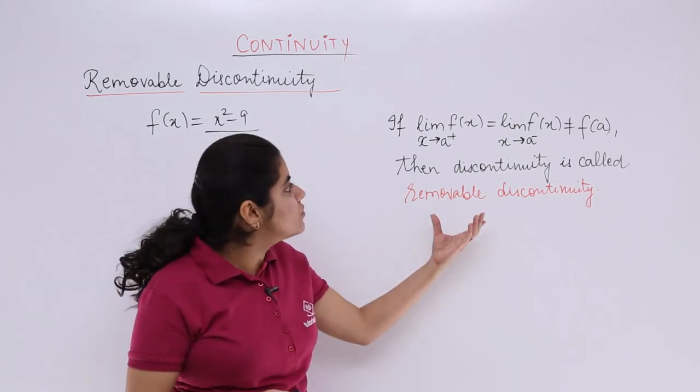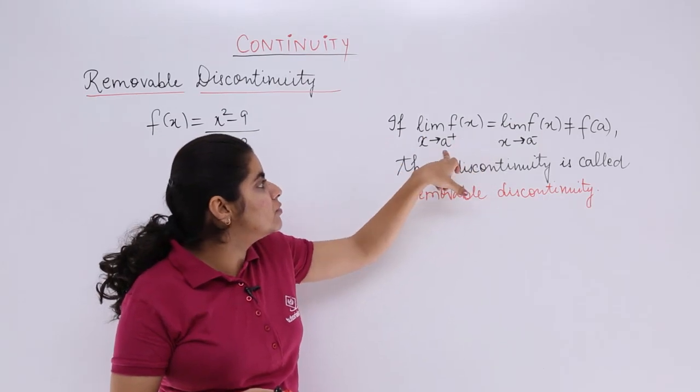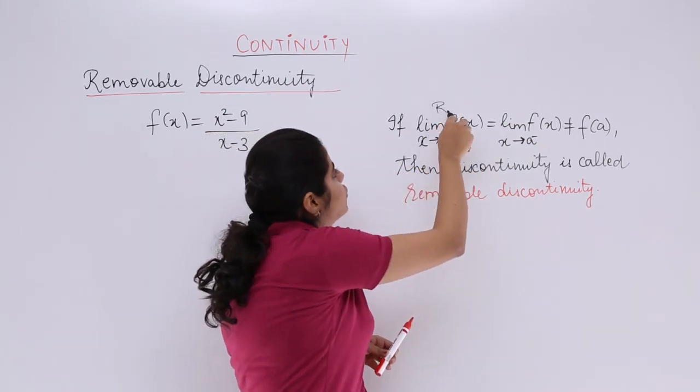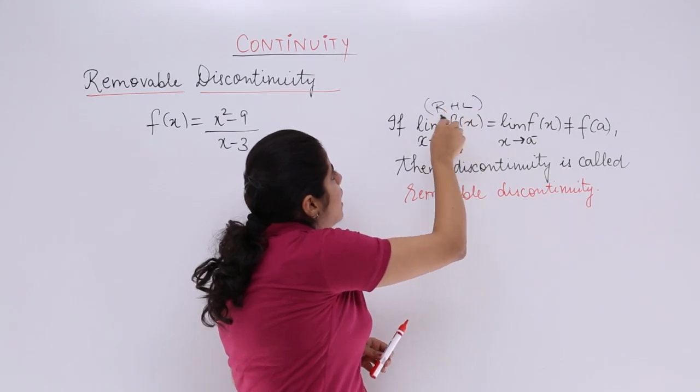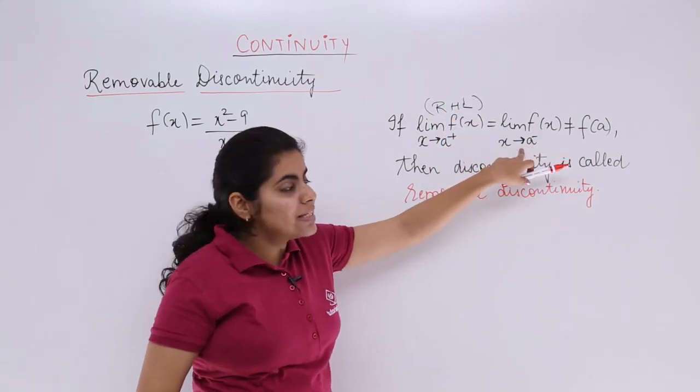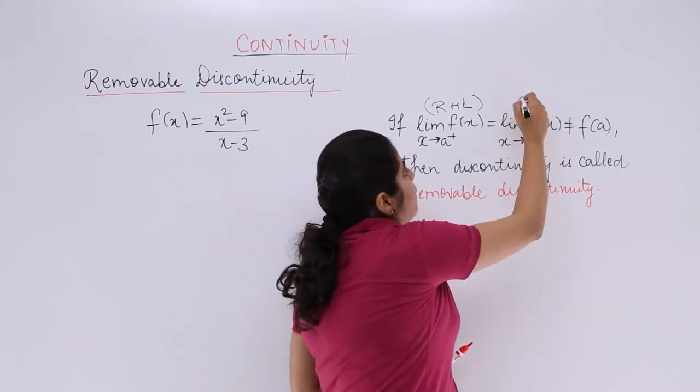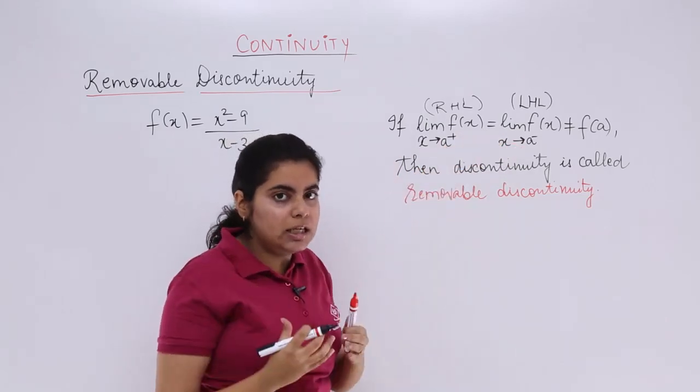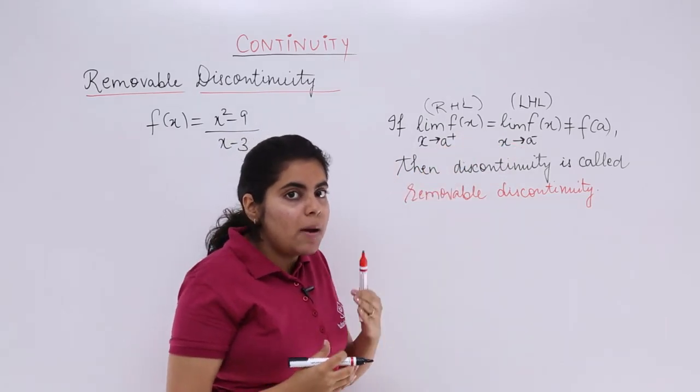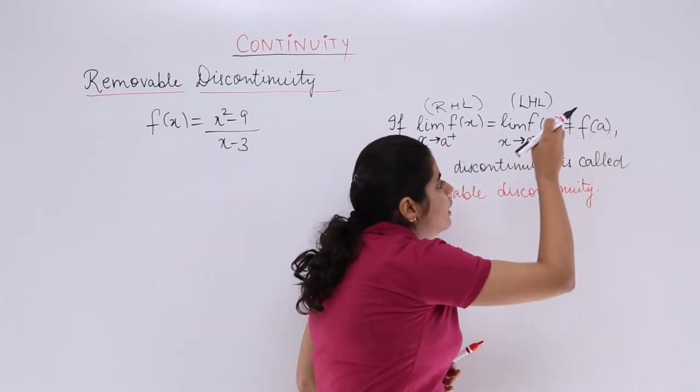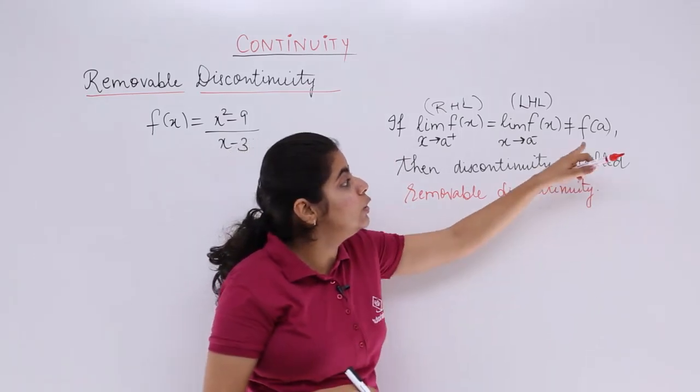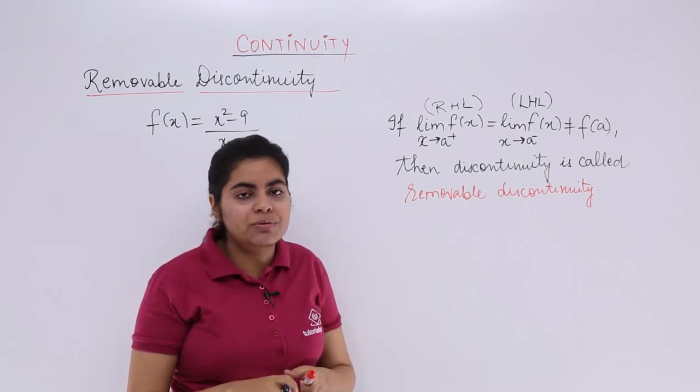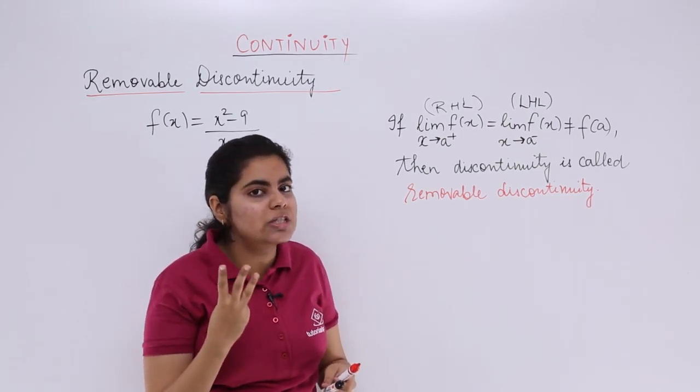So let's see what is written over here. It says that if limit f(x) when x tends to a positive, that means the right hand limit (RHL), and limit f(x) at x tends to a negative, that means LHL, left hand limit. Both these things themselves are equal mutually. But they are not equal to the third thing, that means they are not equal to the value of the function. Then we said that it was not continuous. In the previous video, we saw 3 conditions for continuity.